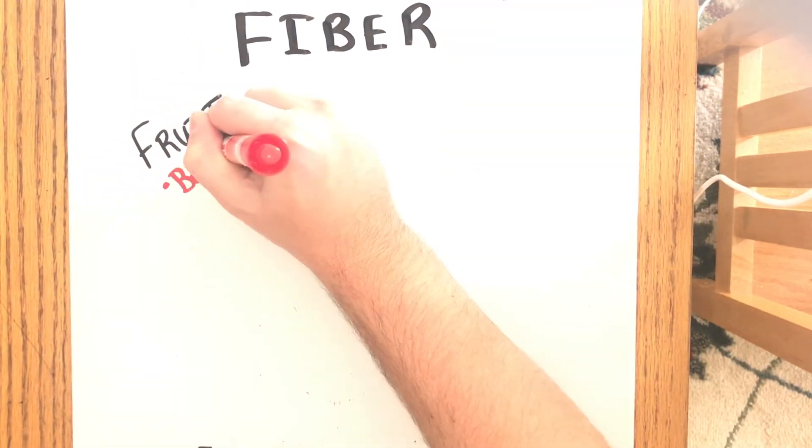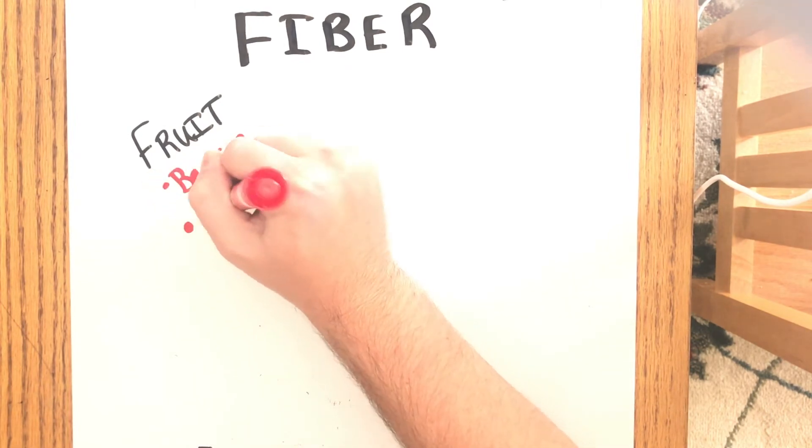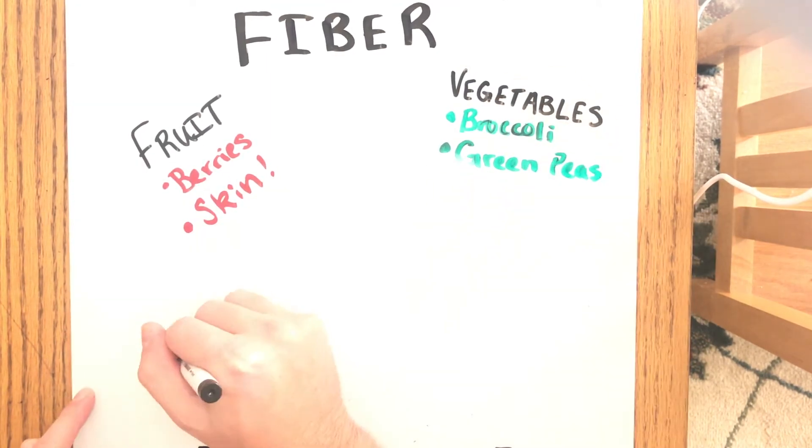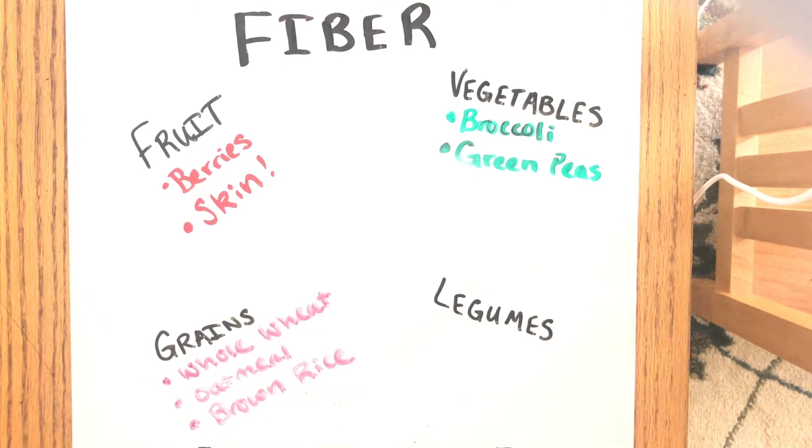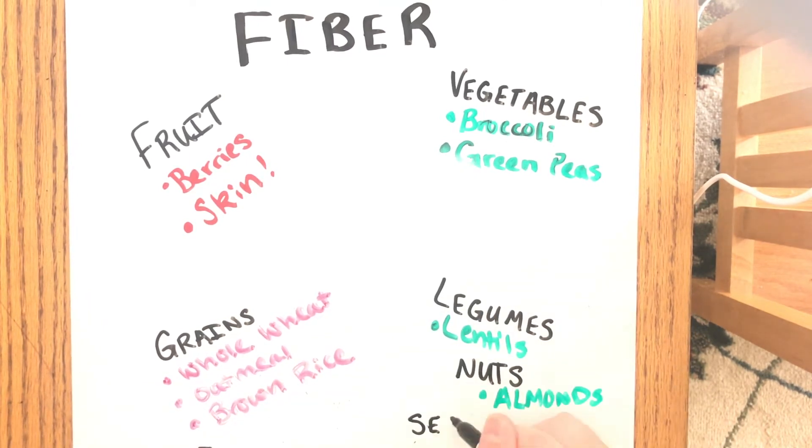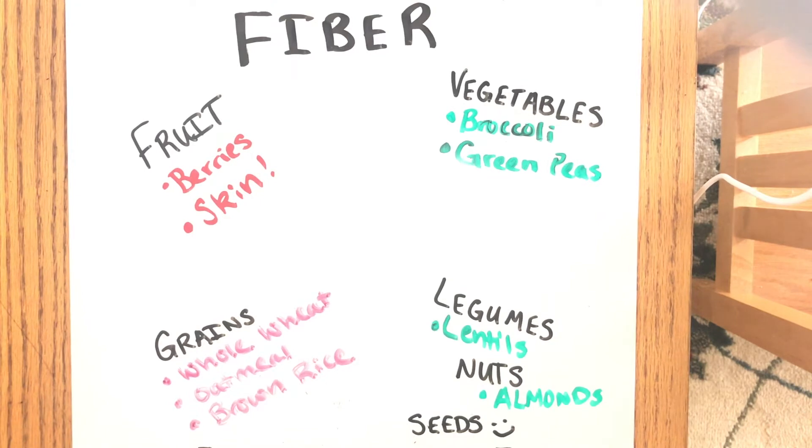Some foods that have a lot of fiber are berries that have seeds and other fruits that have skin like apples and pears, vegetables like broccoli and green peas, grains like whole wheat pasta, oatmeal, and brown rice, legumes like lentils, nuts such as almonds, and seeds like pumpkin seeds or sunflower seeds.